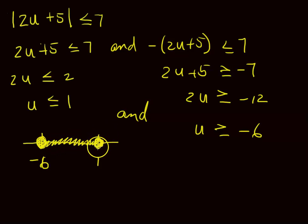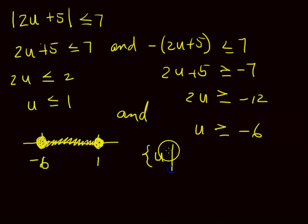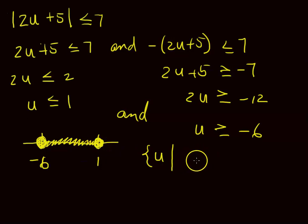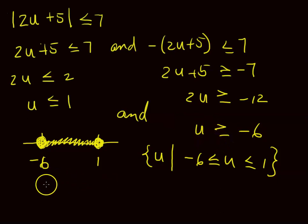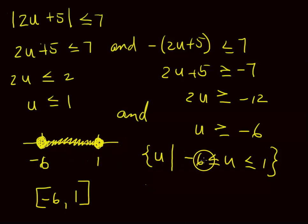When you graph this, you need negative 6 and 1. Do you include the endpoints? Yes — it's less than or equal to for both. So less than or equal to 1, and greater than or equal to negative 6. In set builder notation: the set of all u such that negative 6 is less than or equal to u is less than or equal to 1. For interval notation: square bracket, negative 6, comma, 1, square bracket. You've got to know all three ways — graph, set builder notation, and interval notation.